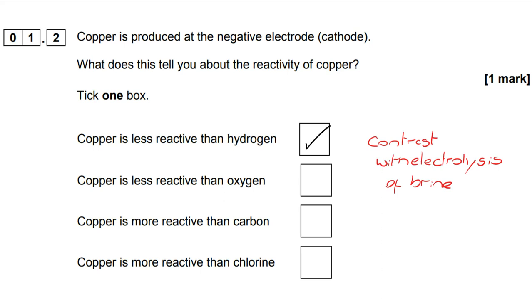If hydrogen is more reactive than the metal, then that metal will be produced. But if the metal is more reactive than hydrogen, then hydrogen will be produced at the negative electrode.